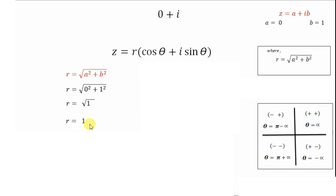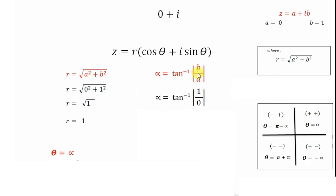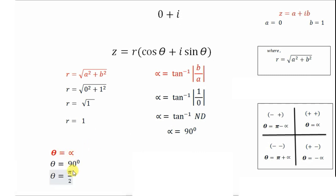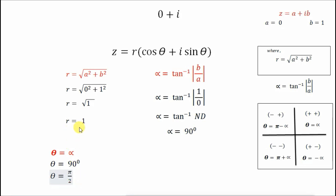Now we need to find theta. We check the sign of a and b: both are positive, so we choose theta from the first quadrant, meaning theta = alpha. To find alpha: alpha = tan⁻¹(|b/a|) = tan⁻¹(1/0), which is undefined. tan inverse of undefined is 90 degrees. So alpha = 90°, and therefore theta = 90° = π/2. We have found modulus r = 1 and argument theta = π/2.